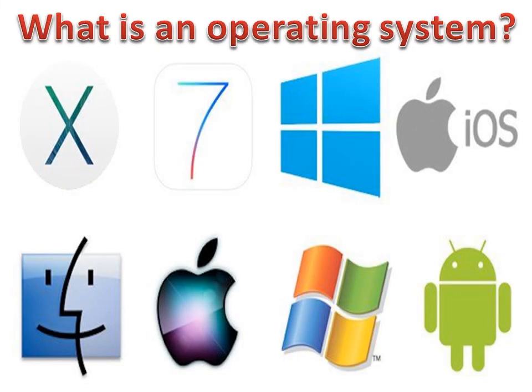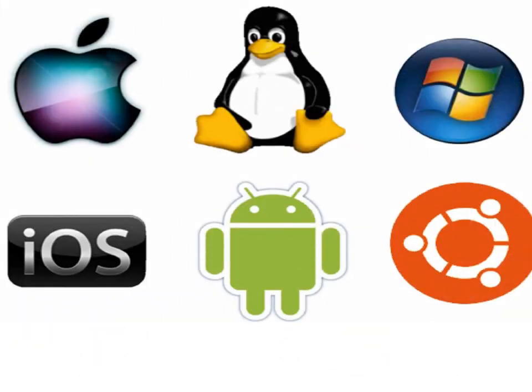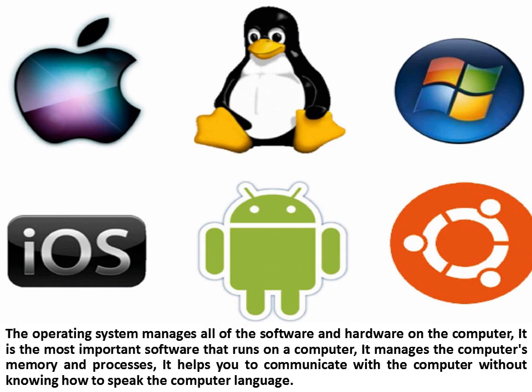What is an operating system? The operating system manages all of the software and hardware on the computer. It is the most important software that runs on a computer. It manages the computer's memory and processes. It helps you to communicate with the computer without knowing how to speak the computer language.